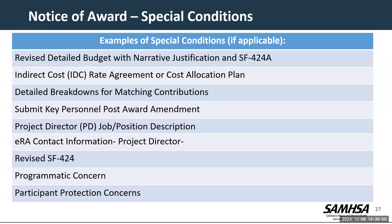Here are some sample special conditions you might see on your notice of award: a revised detailed budget with narrative justification and SF-424A asking you to submit a revised budget with corrections specifically called out, or indirect cost rate agreements or cost allocation plan; a detailed breakdown for matching contributions; a required key personnel post-award amendment; project director job or position description; contact information for the project director; revised SF-424; any programmatic concerns; and participant protection concerns.